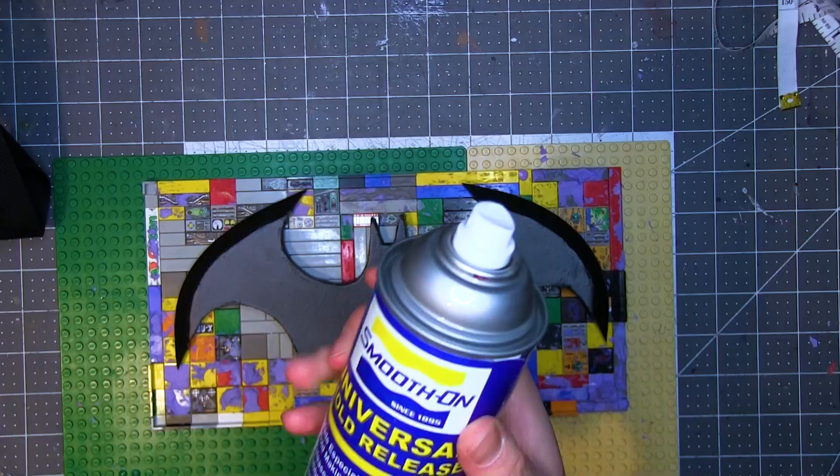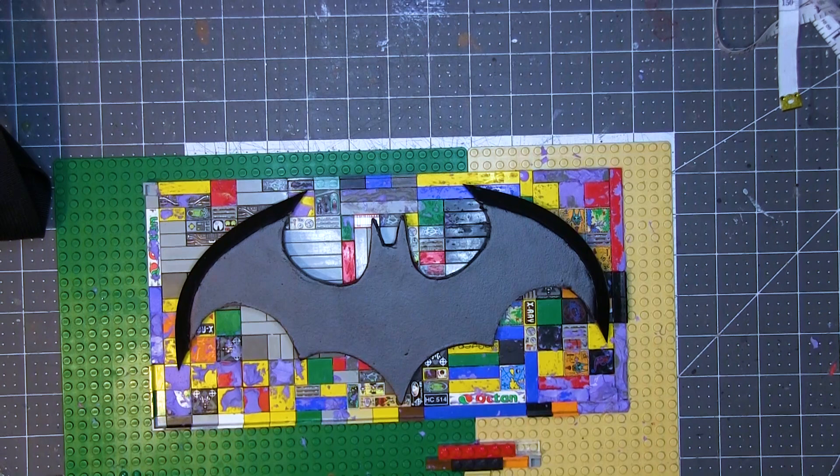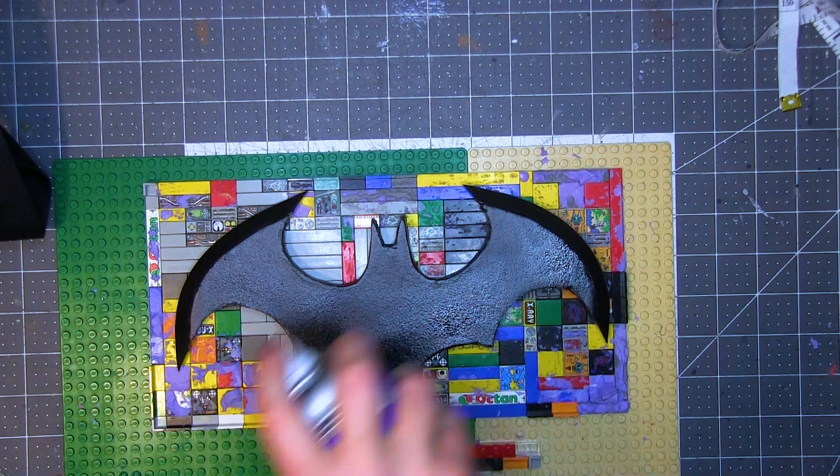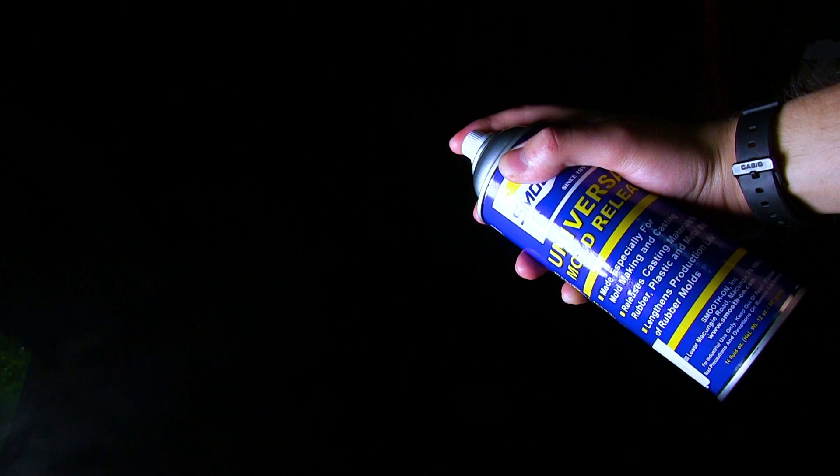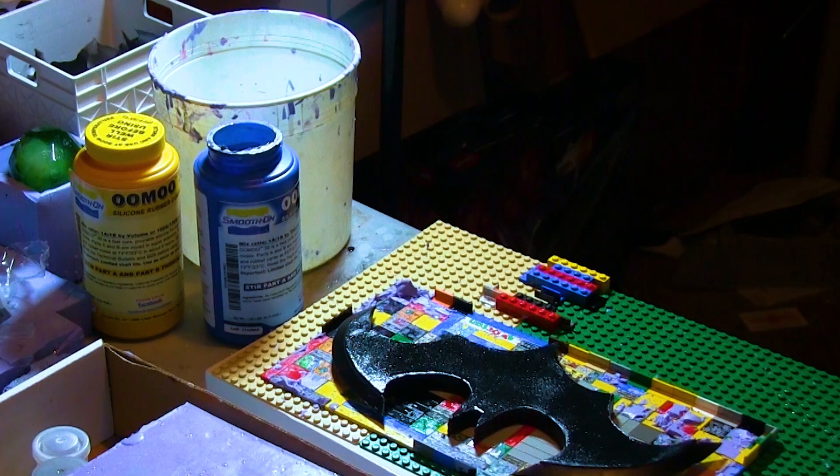This is Smooth-On's Universal Mold Release. I will need way more thorough coverage than what I'm showing you here, but there's a smoke alarm right out of frame. I don't want to set it off, so I'm doing most of the release spraying elsewhere. Okay, yeah, you see how much more shiny that is? That's going to make for a good release.